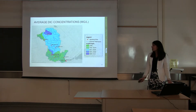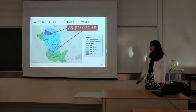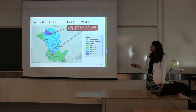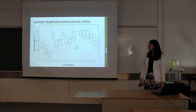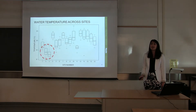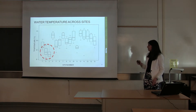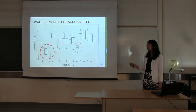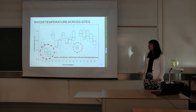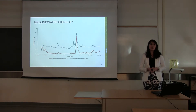Mapping out DIC concentrations shows that the highest concentrations are found closer to the headwaters and at one downstream site. Interestingly, this was correlated with stream water temperatures — those upstream sites showed colder water temperatures with less variability, suggesting a strong groundwater signal.